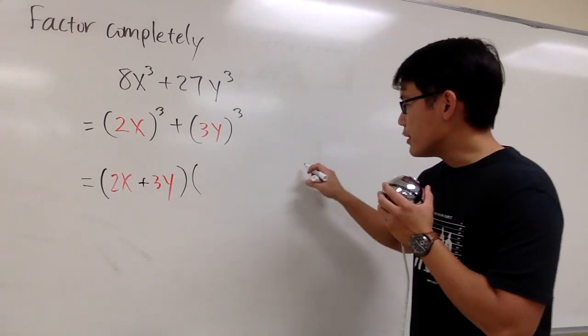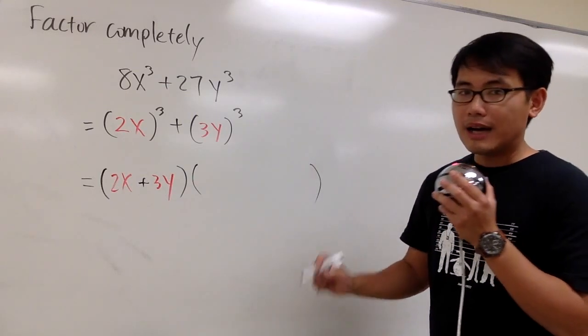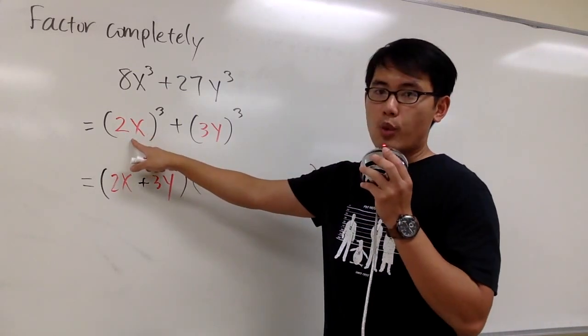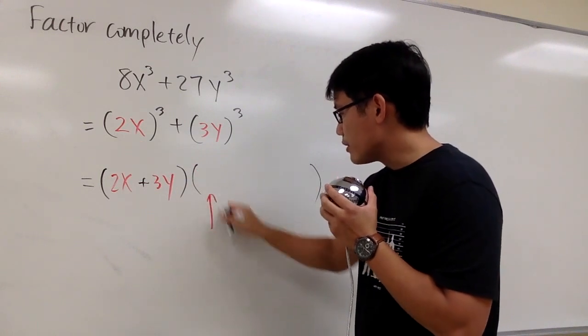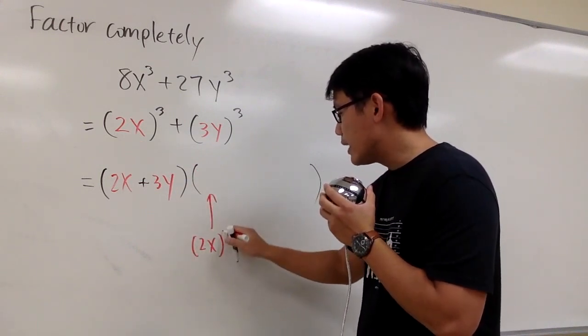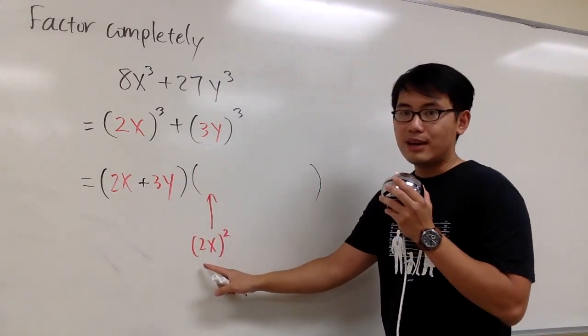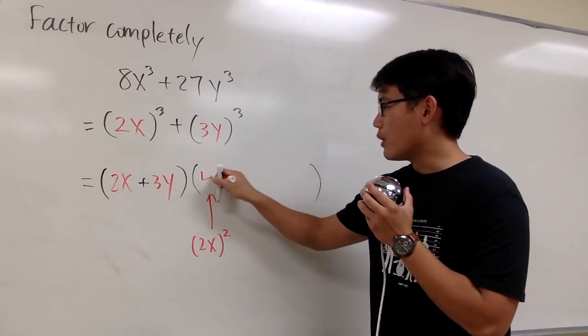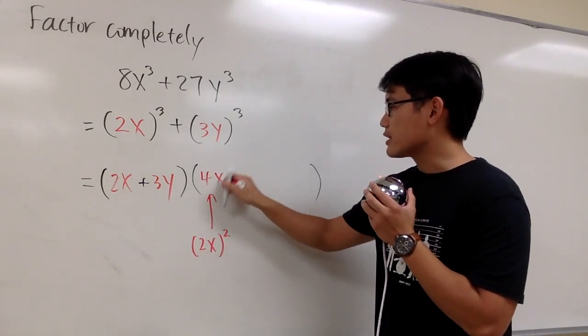And then for the second parentheses, we first are going to have this being squared. I'll write this down. 2x, and then I'll square that. We'll have to work this out. 2² is 4, and x² is just x².